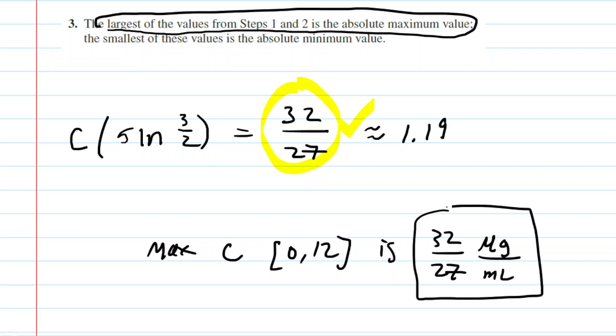Let's move on to step three, which tells us that the largest of the values from steps one and two is the absolute maximum value. We only care about the maximum concentration, so let's look at the values. From step one, we found the concentration at the critical number to be 32/27, which is roughly 1.19. In step two, we found C(0) = 0 and C(12) ≈ 0.06. Which one of those three values is the largest? It's 32/27. That means the max concentration on the interval from 0 to 12 hours is 32/27, and the unit is micrograms per milliliter. There is the final answer.